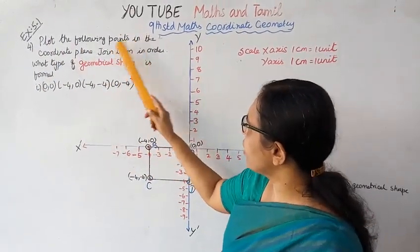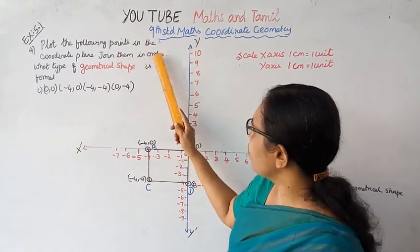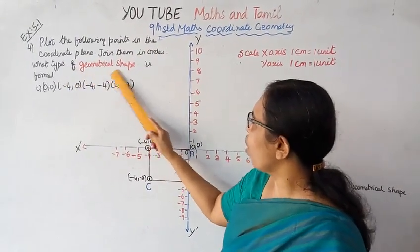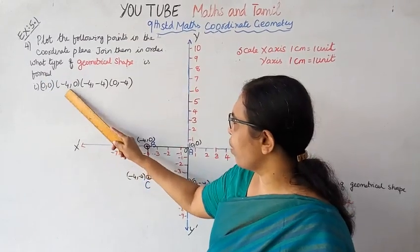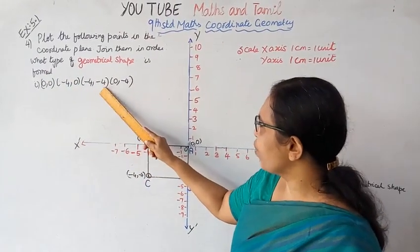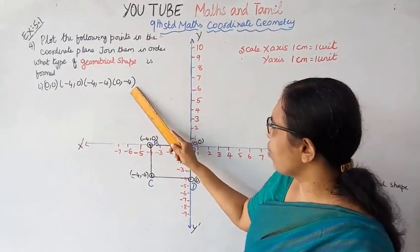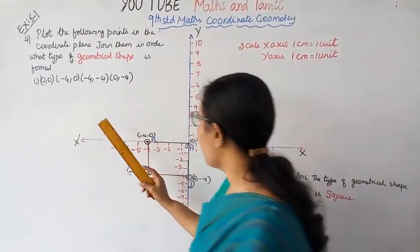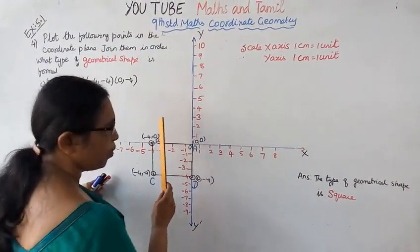Plot the following points in the coordinate plane, join them in order. What type of geometrical shape is formed? The points are: (0,0), (-4,0), (-4,-4), (0,-4). Now you can plot these points.